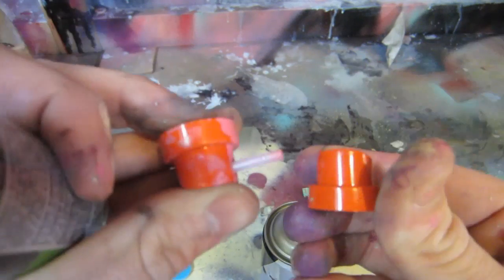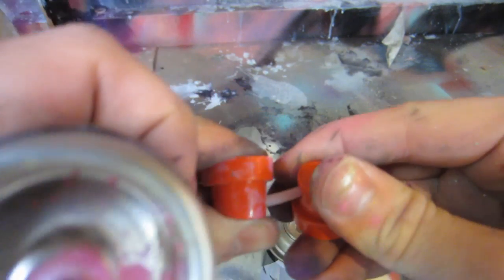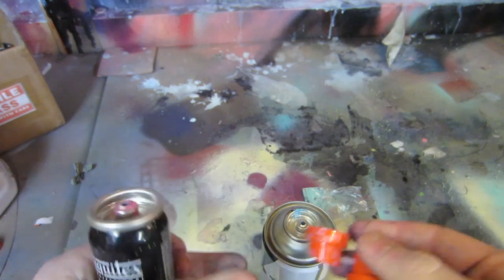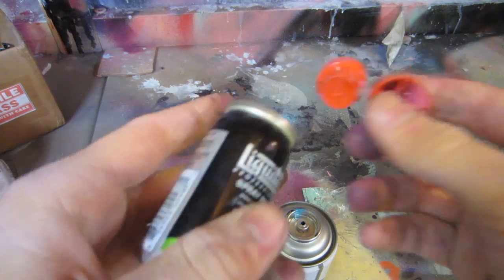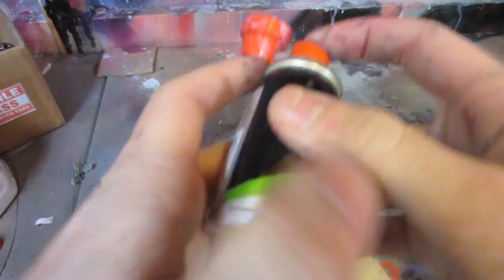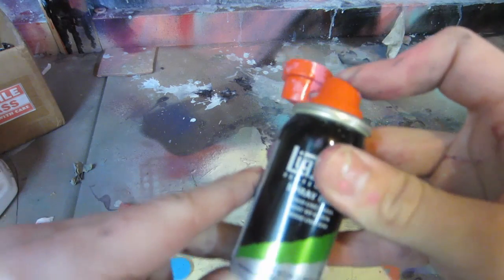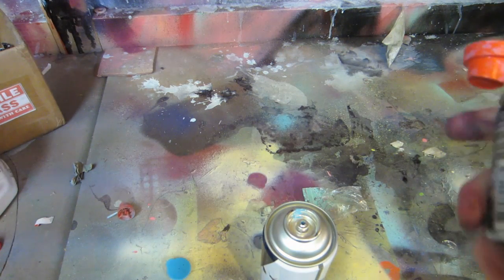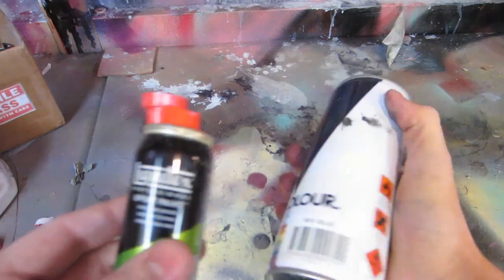So basically just pop one into the other and then onto your can. You can put the one can that you want the paint to go into, so in this case the pocket can, into a freezer or something if it has some paint in it. So that way it is a lot more low pressure than the other can.